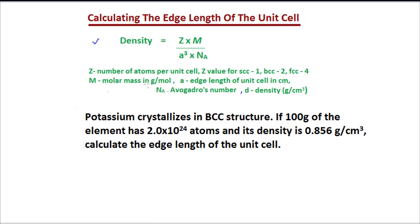M is the molar mass or atomic mass in gram per mole and A³ is the volume of unit cell, where A is edge length of unit cell measured in centimeter. This is what we are going to calculate in this session. I will show you how you can calculate by using density formula. NA is Avogadro number, D is density and it is measured in gram per centimeter cube.